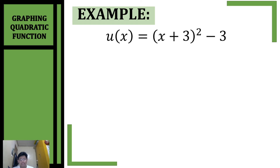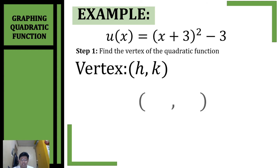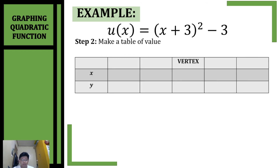Let's have another example. We're going to graph this quadratic function. First step: find the vertex. Since this quadratic function is written in vertex form, we can get h and k by changing the sign of h — positive 3 becomes negative 3 — and then copying our k which is negative 3. So our vertex is (-3, -3). Now that we have our vertex, proceed to step 2: make a table of values, placing our vertex at the middle, negative 3, negative 3.